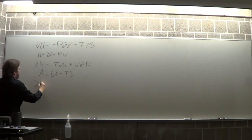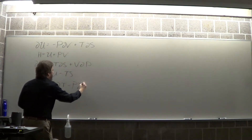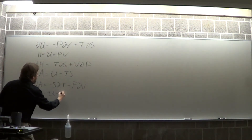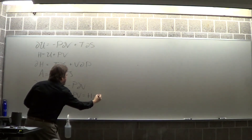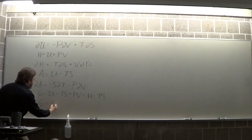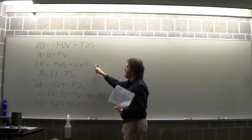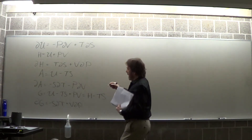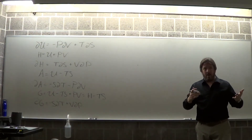For A, there's the change in A, and again you should be able to do this. G is the ultimate Legendre transform — take U and subtract out TS and TV. That's H minus TS. So: U is a function of V and S, H is a function of P and S, A is a function of V and T, and G is a function of P and T.